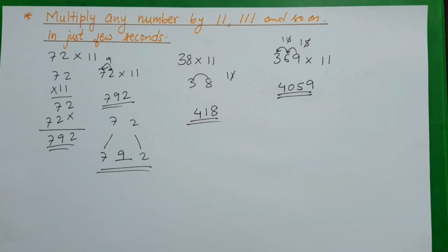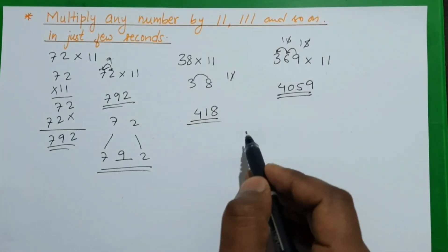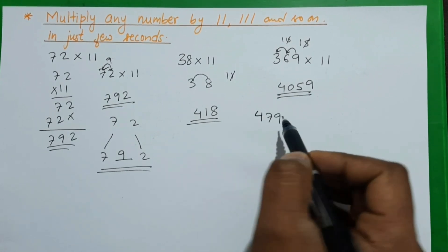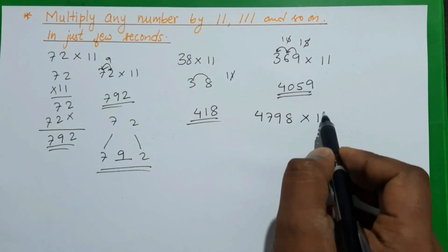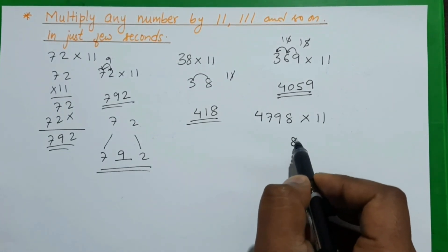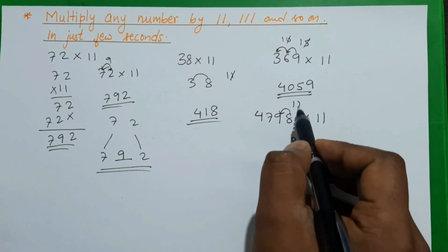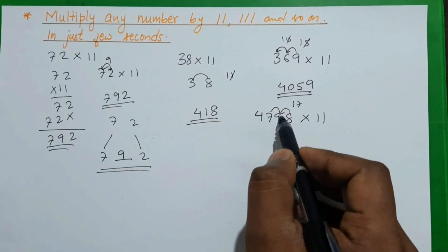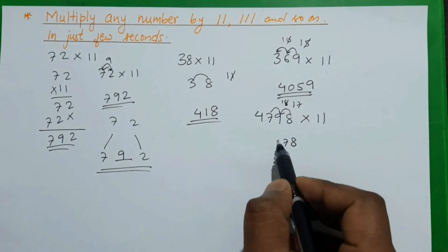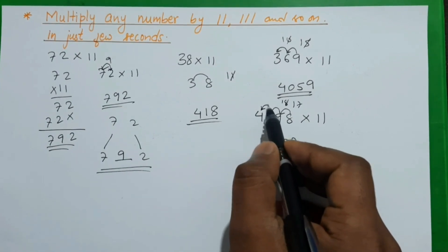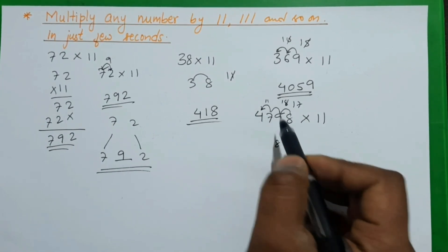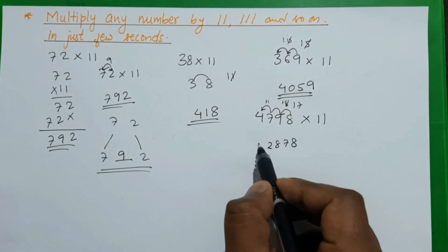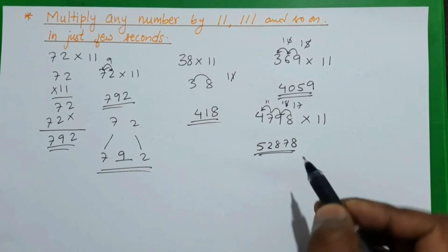Let's try a four-digit number: 4798 × 11. We write 8 first. Then 8 plus 9 is 17 — write 7, carry 1. Then 9 plus 7 is 16, plus 1 is 17 — write 7, carry 1. Wait: 9 plus 7 is 16, plus 1 is 17 — write 7, carry 1. Then 7 plus 4 is 11, plus 1 is 12 — write 2, carry 1. Finally 1 plus 4 is 5. Our answer is 52778.